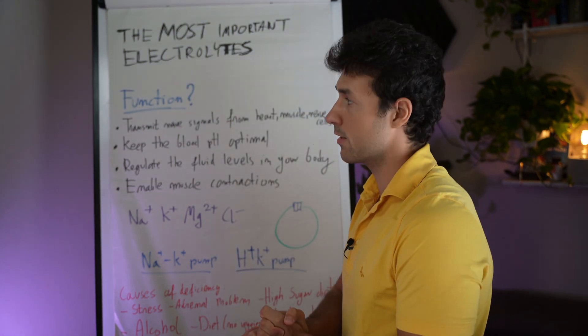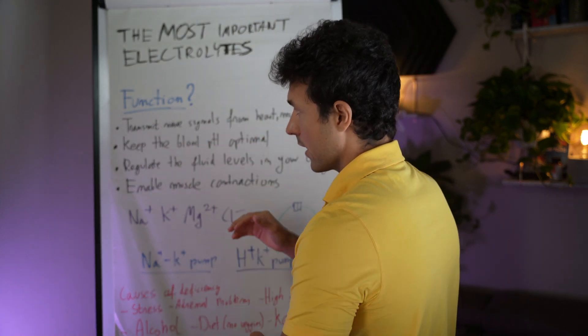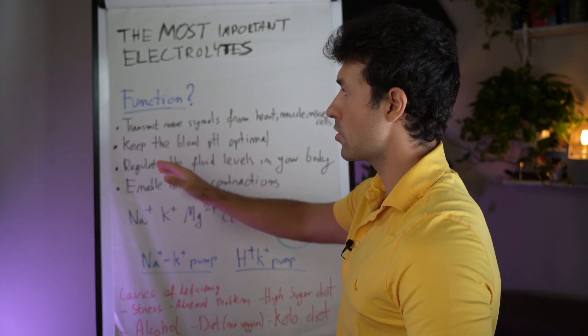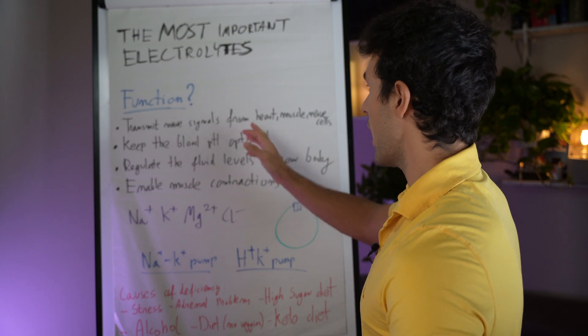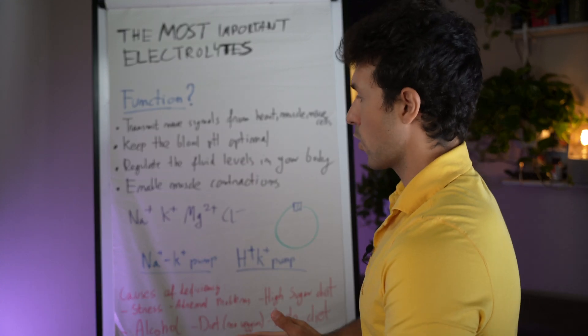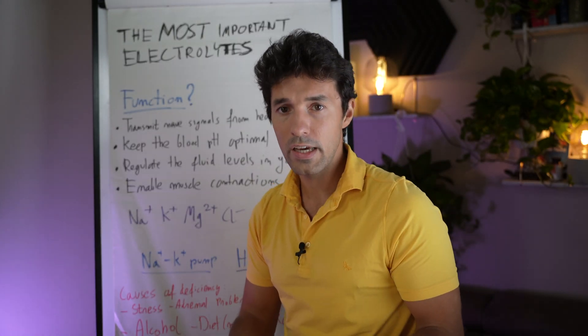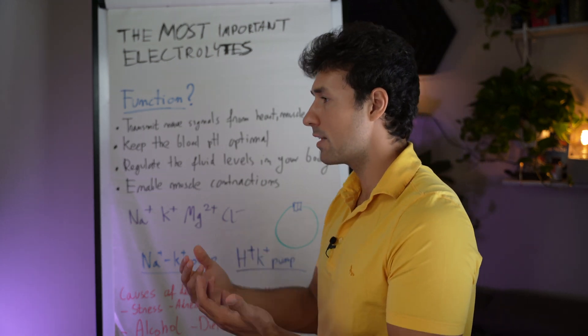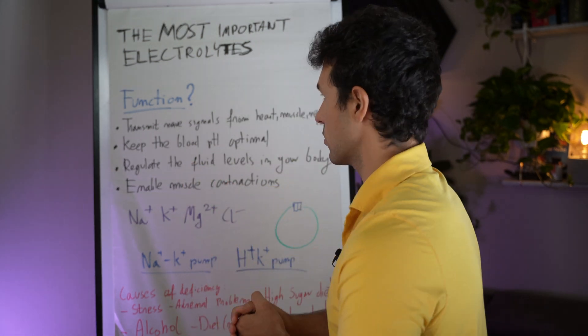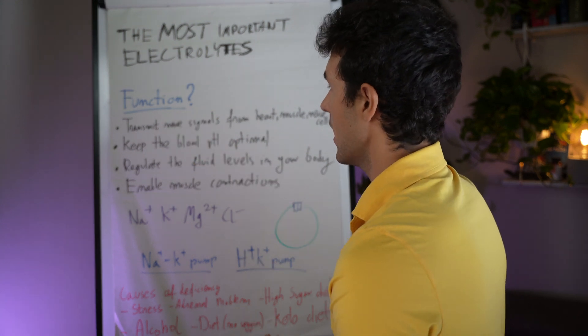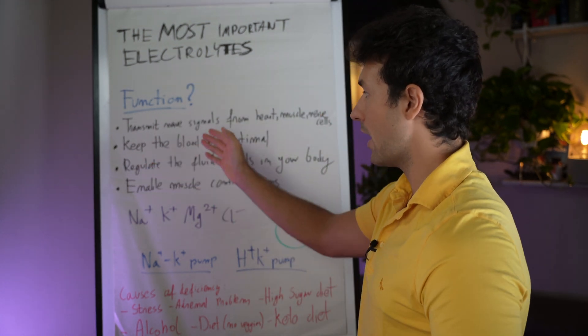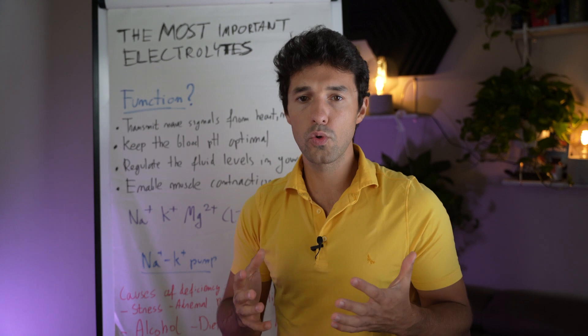Let's discuss some functions of the electrolytes. The first function is what these pumps do. The first function is to transmit nerve signals from heart, muscle, and nerve cells, so as I've said previously, to basically transmit electricity in our body. The next one is to keep the blood pH optimal.